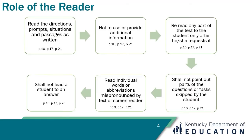If a student is taking the alternate assessment, they are currently scripted assessments, and test administrators may determine when a student is not focused and may re-read at any time. A reader may not point out parts of questions or tasks skipped by the student. A reader may read individual words or abbreviations mispronounced by a text or screen reader if specifically requested by the student. A reader may not lead a student to an answer — remember, no emphatic speech when reading. These rules apply to any state test given in any format, whether the student is taking the test online or paper and pencil.